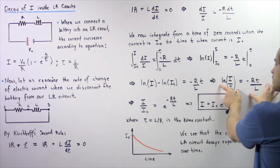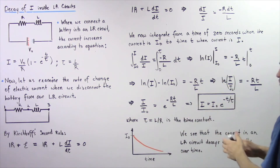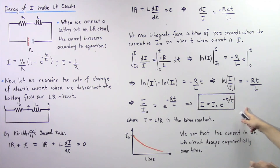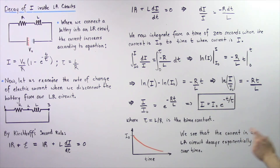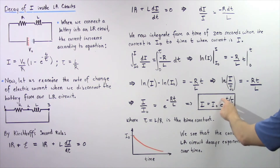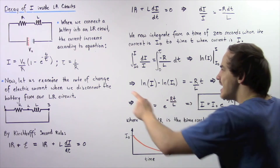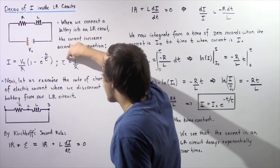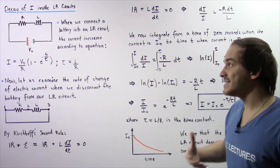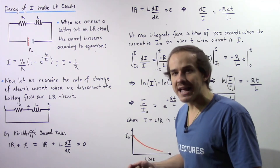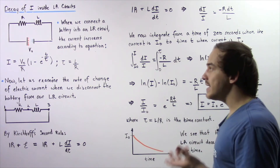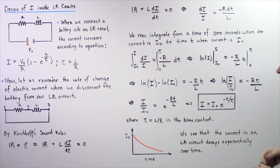Taking the exponential of both sides eliminates the natural log, and bringing I0 to the right side gives the final equation: I(t) = I0 × e^(−t/τ), where τ = L/R is the time constant. Here, the time constant represents how long it takes the electric current to decrease by 63% of its initial value I0.